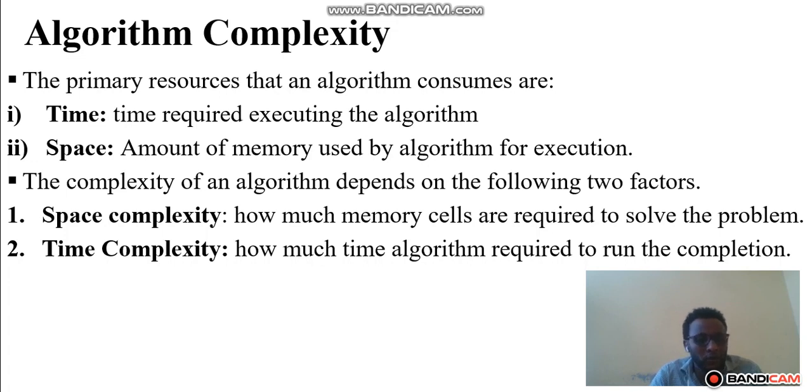The complexity of an algorithm depends on two factors. The first one is space complexity. The second one is time complexity. Space complexity is how many memory cells are required to solve the problem. Time complexity is how much time the algorithm requires to run to completion.